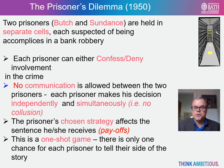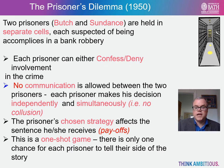Each prisoner is given the opportunity either to betray the other by testifying that the other committed the crime, or to cooperate with the other by remaining silent. In essence, each prisoner has an opportunity to either confess or deny involvement in the bank robbery. The prisoner's choice will affect their sentence — in economics terms we refer to these as the payoffs. They only have one opportunity to tell their side of the story, which in economics we call a one-shot game.